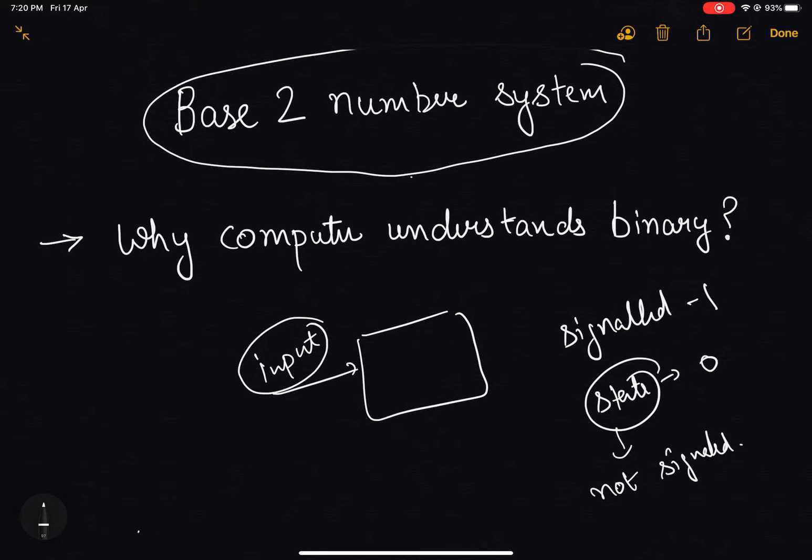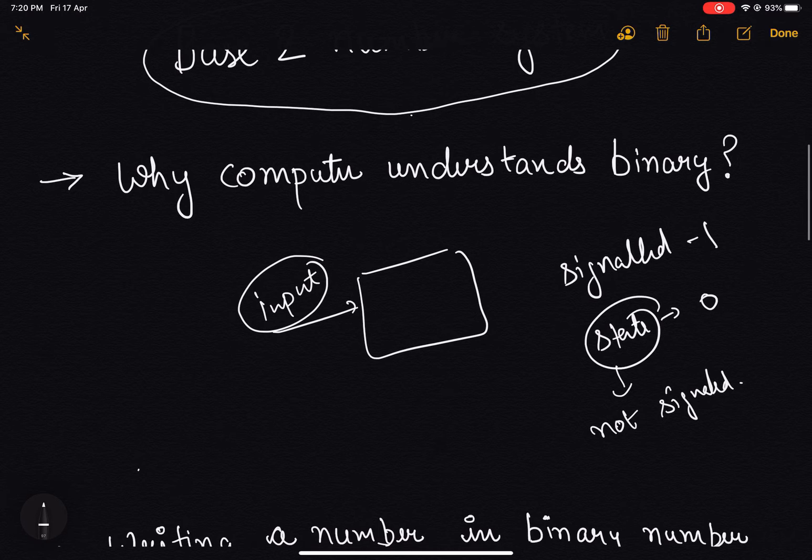So 0 and 1 in binary actually translates to signal and no signal state in electrical devices. If you want to make a number, we can take multiple wires and multiple inputs to represent multiple ones and multiple zeros.